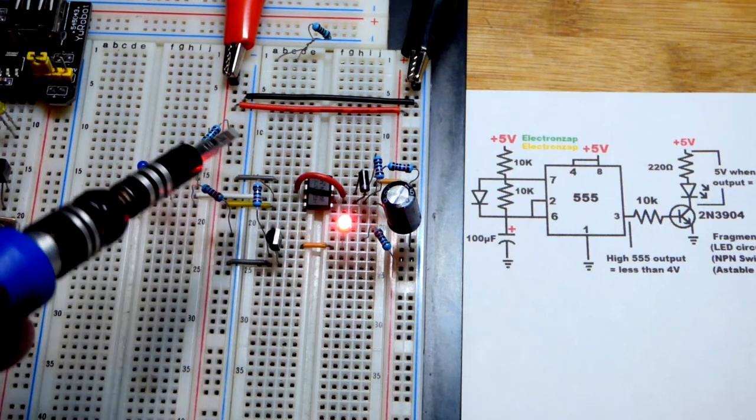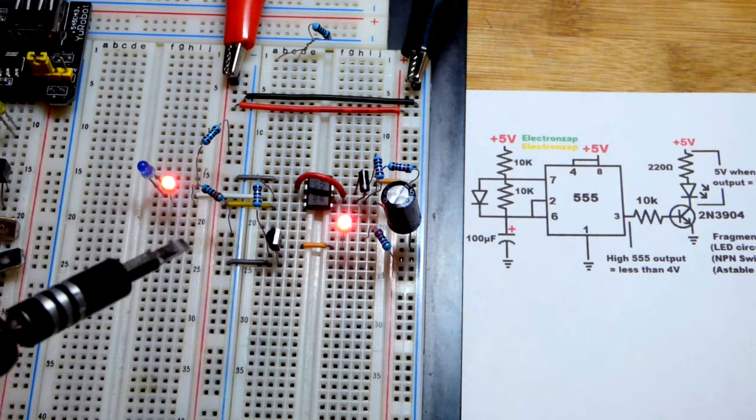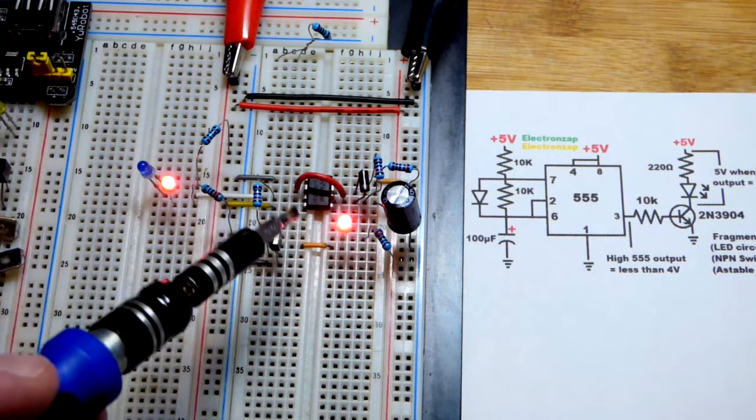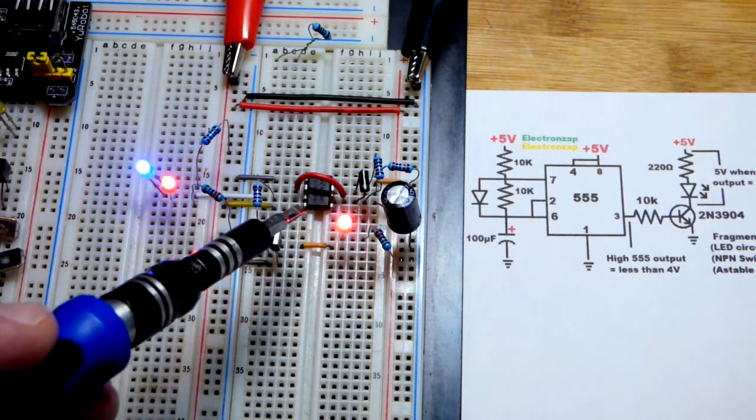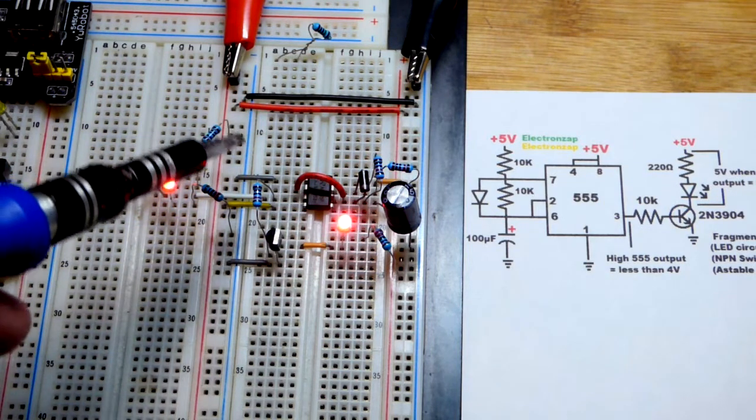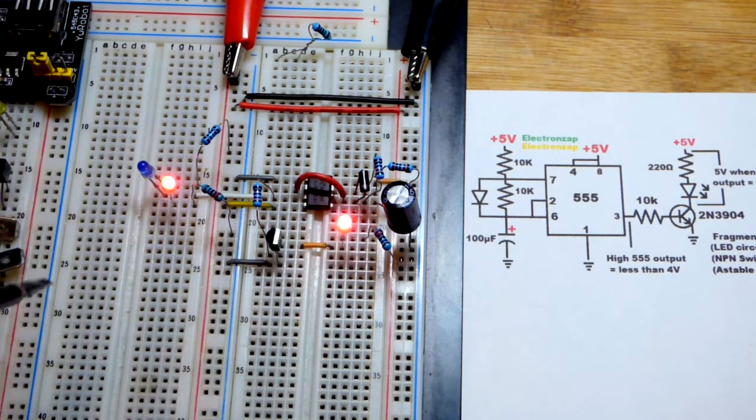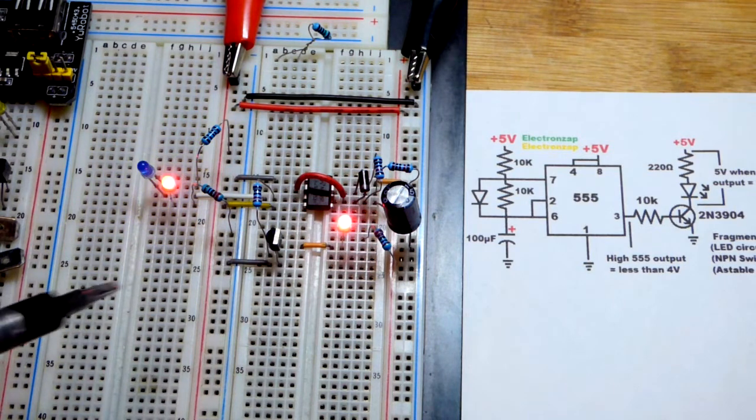When the output is high, it's providing as close to 5 volts as it can, though it falls a bit short. We're going to measure that. The red LED lights up. When the output is low, it makes a pretty close to direct connection to ground, and the blue LED lights up.